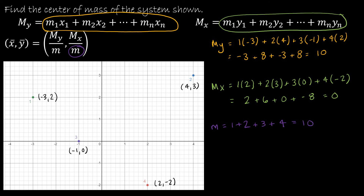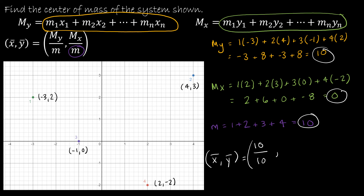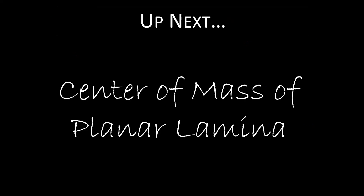So my center of mass (x-bar, y-bar) is found by taking the moment of y, which is 10, divided by the mass of 10, comma the moment of x, which is 0, divided by the mass of 10. That gives a center of mass of (1, 0). So in this system, the point (1, 0) is the center of mass. Coming up next, we are going to find the center of mass of a planar lamina, which is where calculus will come into play.